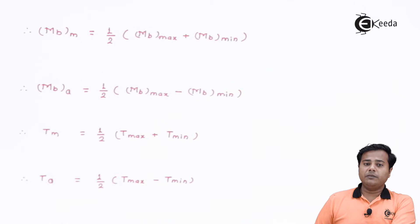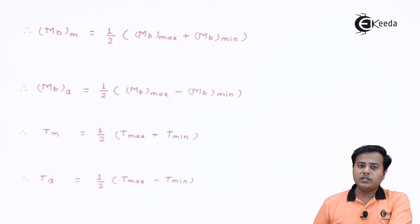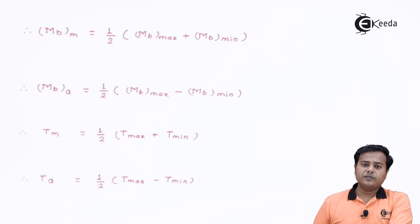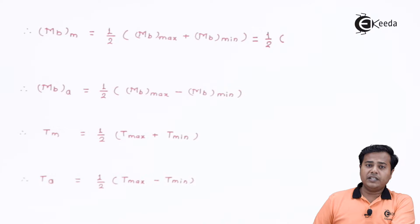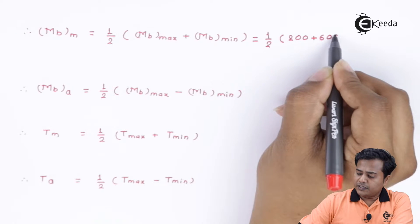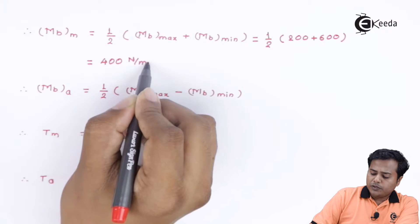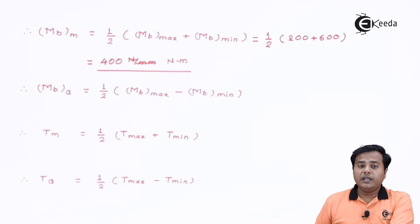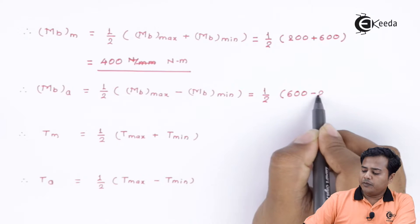As usual, let us find out the mean values and amplitude values for bending moment as well as torsional moment. They have given us bending moment values and torsional moment values rather than direct stress values. The variation in bending moment is 200 Nm minimum and 600 Nm maximum. After solving, the mean bending moment comes out to be 400 Nm, and we proceed to find the amplitude value using the maximum value of 600 and minimum of 200.